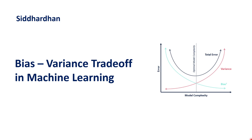Hello everyone, I am Siddhartham. Currently we are in the sixth module of our hands-on machine learning course and this sixth module is all about machine learning models. So far in this module we have discussed what is meant by a machine learning model and how it works, the different types of supervised and unsupervised learning models, and some important issues such as overfitting and underfitting. In those videos I mentioned that bias-variance trade-off is a technique we can use to rectify this issue. So in this video let's try to understand what is meant by bias-variance trade-off and how we can use it to prevent overfitting or underfitting.